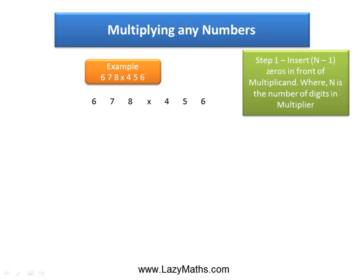The first step is to insert n minus 1 zeros in front of the multiplicand, which is 678 in this case, where n is the number of digits in the multiplier. The multiplier is 456. As you can see, 456 has 3 digits, so n equals 3, and hence n minus 1 will be 3 minus 1 equals 2. So we need to insert two zeros in front of the multiplicand, which is 678. So we insert two zeros right here.